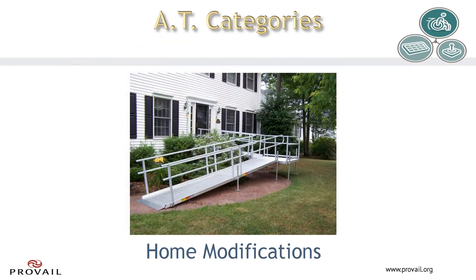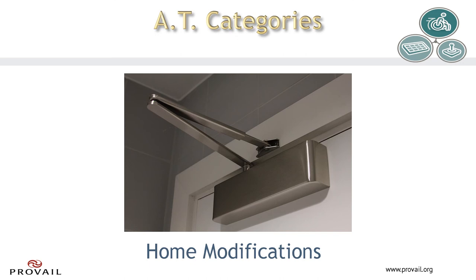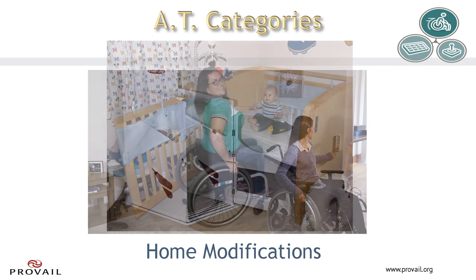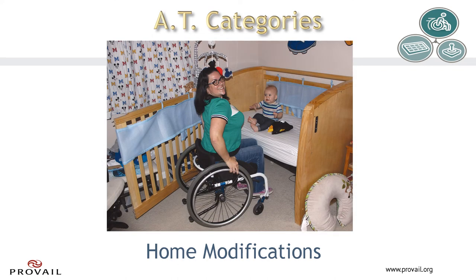Here we see a standard ramp for getting in and out of a residence when in a wheelchair. This is an automatic door opener that allows a door to be opened by activating some type of a switch or motion sensor. This is a simple elevator that can be added to a residence to get to different levels in the home or business. This is a great adaptation of a crib that allows this mother to get in close and manage the needs of her baby just as any other mother would need to do.